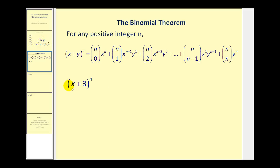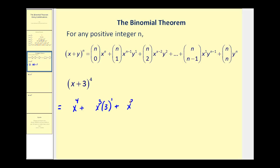Let's apply that to expand the quantity x plus three to the fourth power. Let's first write out the variable part, then we'll come back and find the combinations. The first term would be x to the fourth and zero factors of three, plus x to the third and we'd start picking up factors of three. Notice that instead of y, we have three, but the process is the same. Plus two factors of x and two factors of three, plus one factor of x and three factors of three, and lastly zero factors of x and four factors of three.